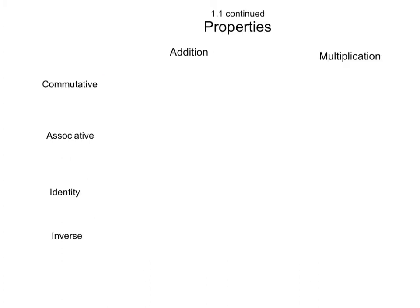Within this section, we also have properties of addition and multiplication. Each property can apply to both operations. The commutative property of addition is a plus b equals b plus a. It doesn't matter what order you have the numbers in. Same with multiplication: a times b equals b times a.